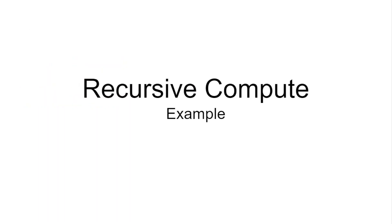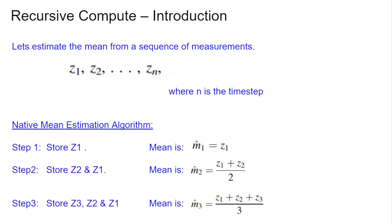From a recursive compute perspective, let's appreciate how it is really done. We'll take the simplest example where we have a bunch of estimates or numbers z1 to zn — just a sequence of measurements. What we want to do is compute the mean of this sequence. Usually we just take an average, but let's see the difference between computing an average naively versus computing it recursively.